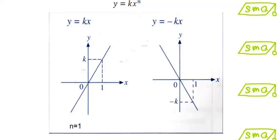The graph of y equals kx where n is equal to 1 is a linear graph which passes through the origin. For y equals kx, the gradient of the graph is positive, while for y equals negative kx, the gradient of the graph is negative.